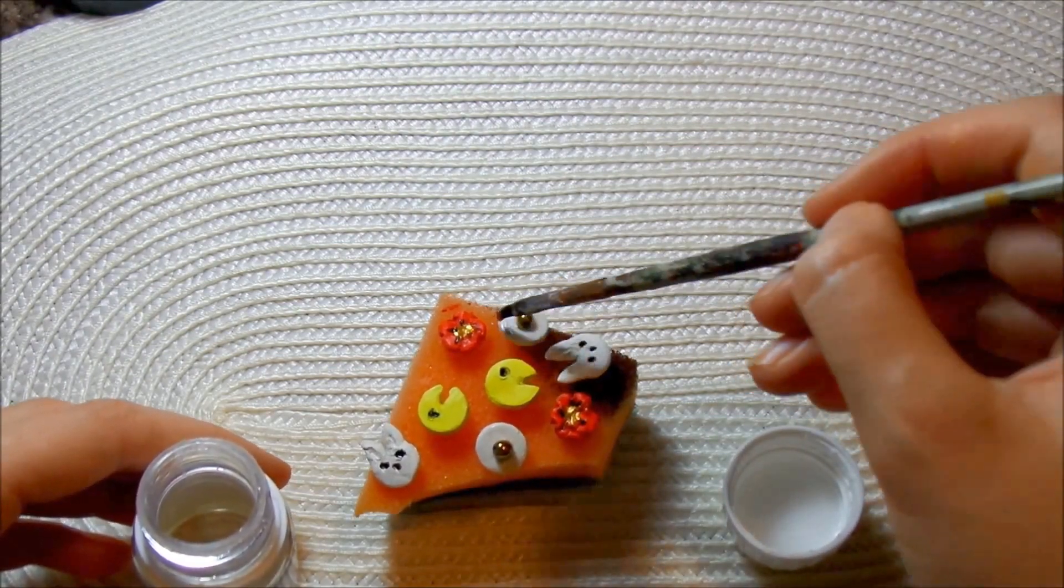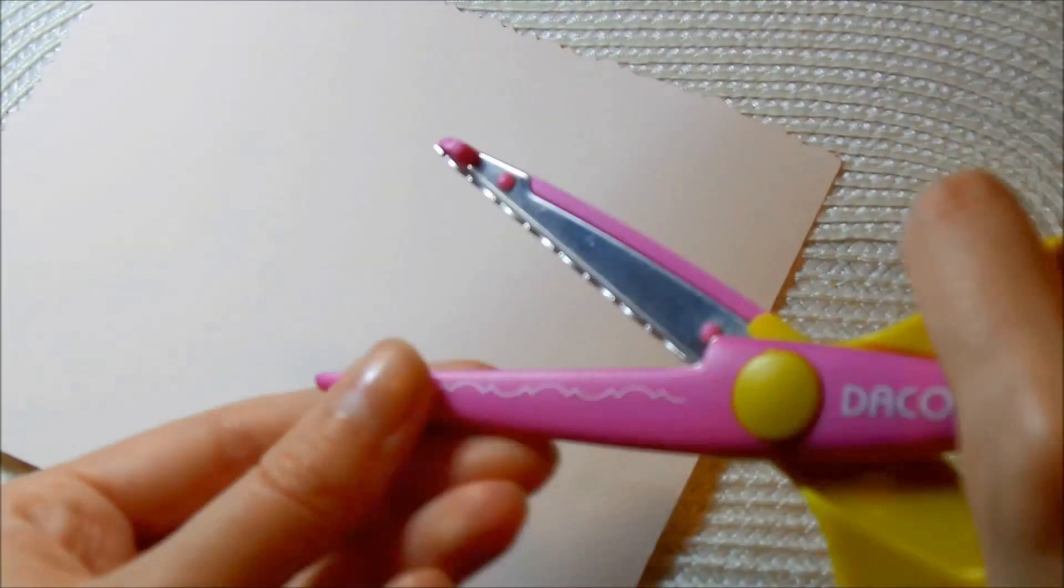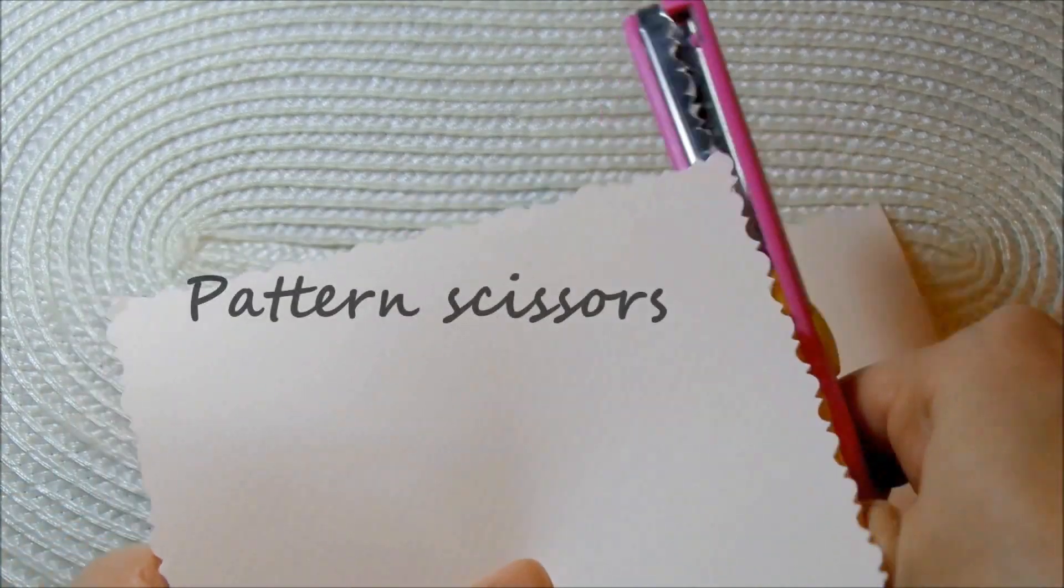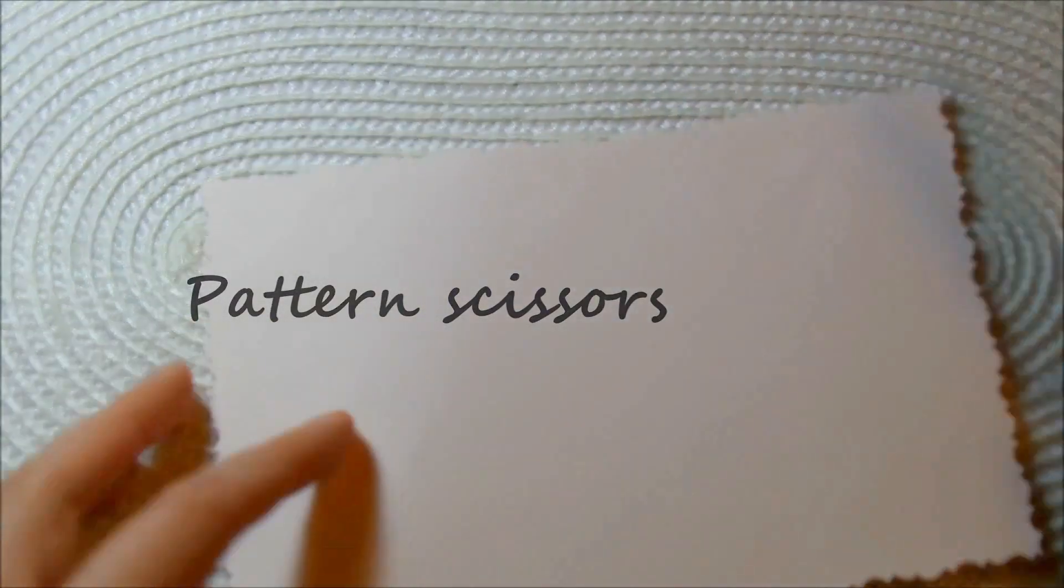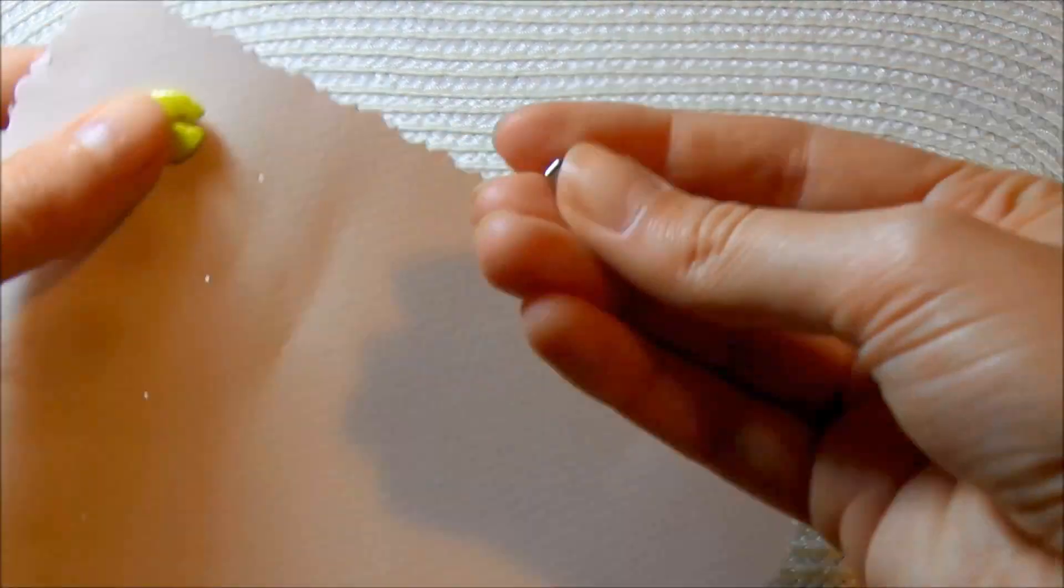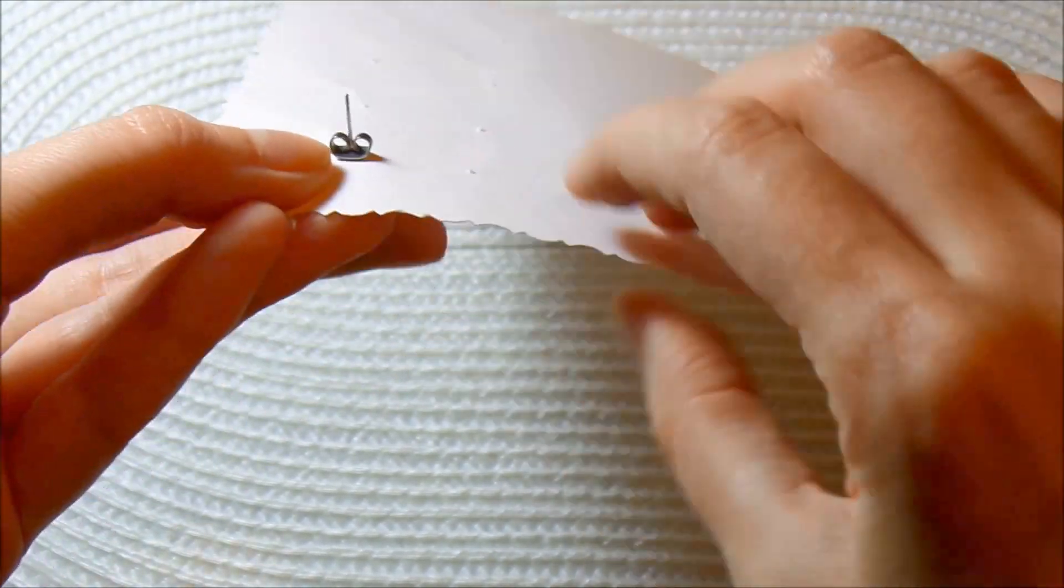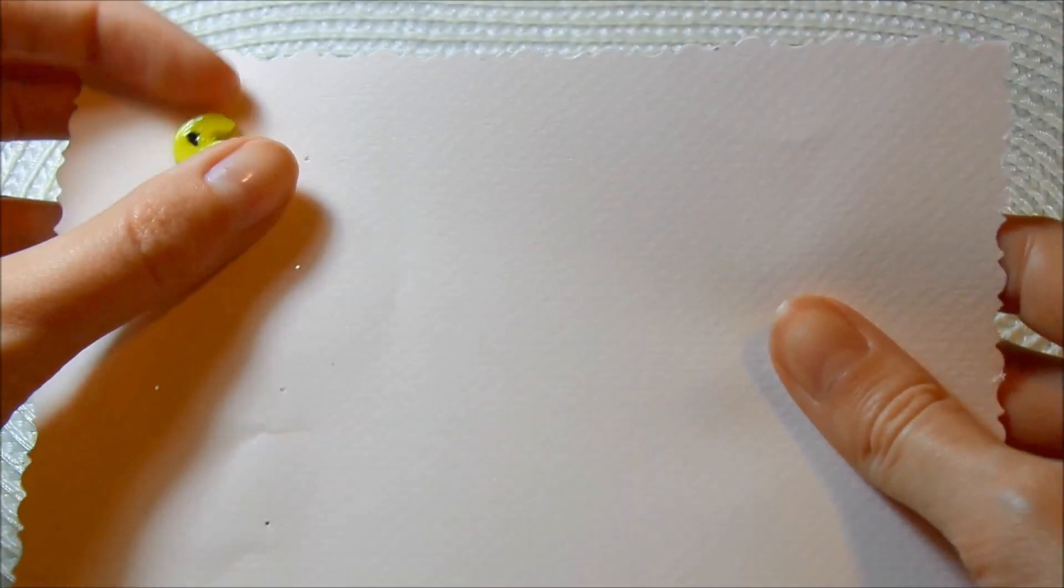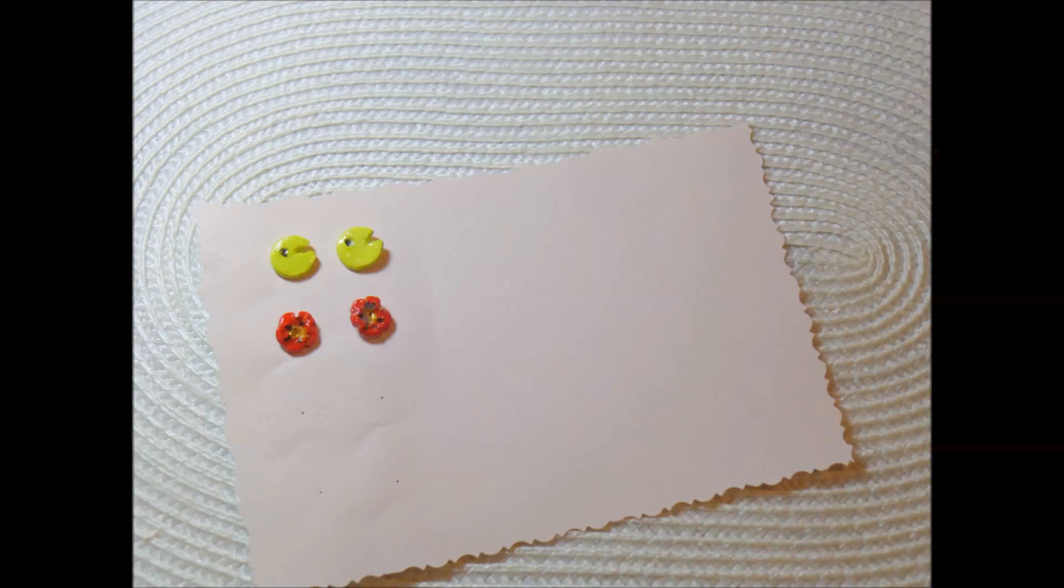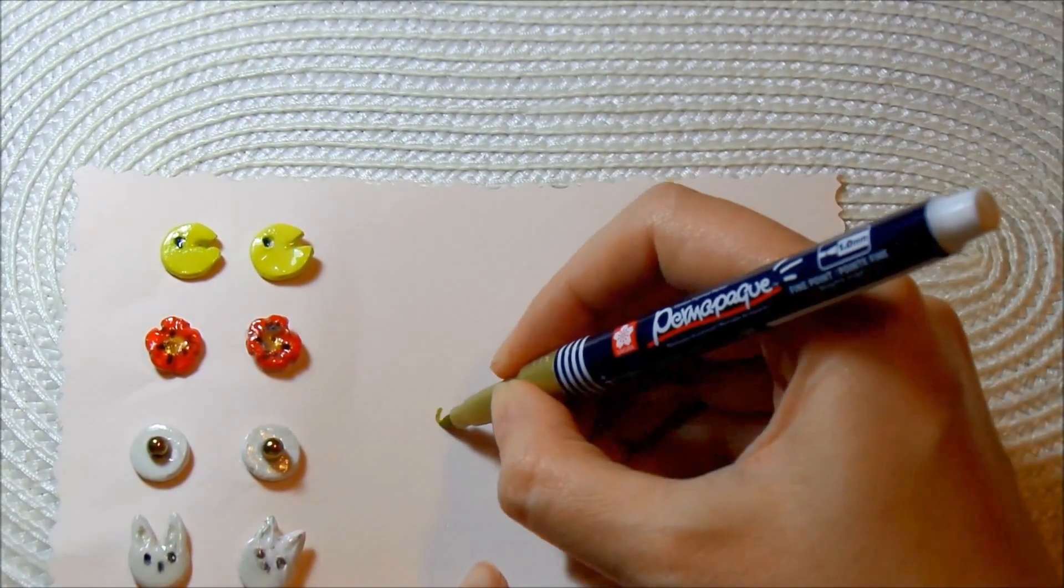At the end, use varnish for protection and glow. If you want to gift these to someone, you can cut out a rectangle using a pattern scissors, then make some holes with a needle, push the earrings through, and write something nice next to them.